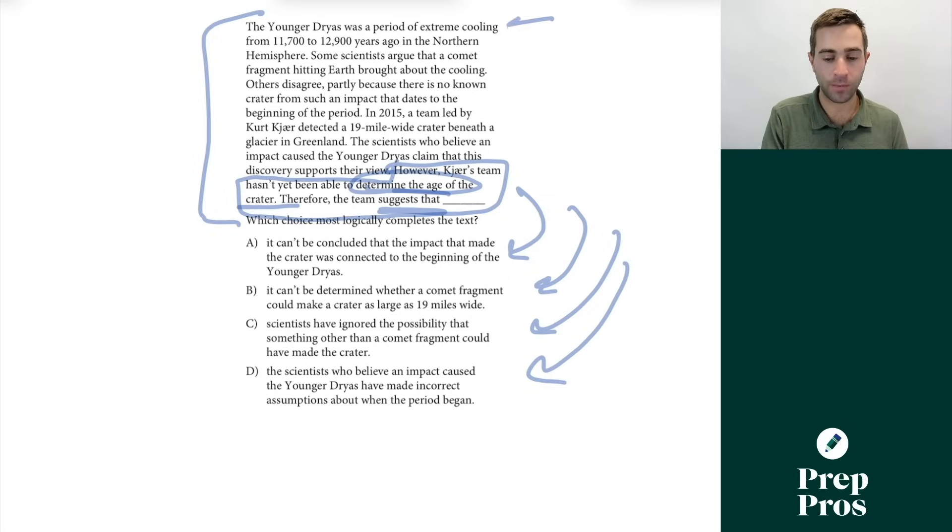So we talked about the Younger Dryas was a period of extreme cooling from that period. Some scientists argue that a fragment hitting Earth brought about the cooling. Others disagree. This is a really important sentence here we're connecting back to, partly because there is no known crater from such an impact that dates to the beginning of the period. Now we discovered this new crater, which some scientists think caused the claim, basically caused the Younger Dryas, but they can't determine the age of the crater. Therefore, we don't know if this crater actually is what caused the Younger Dryas because we need the dates to know if it actually occurred in this period.